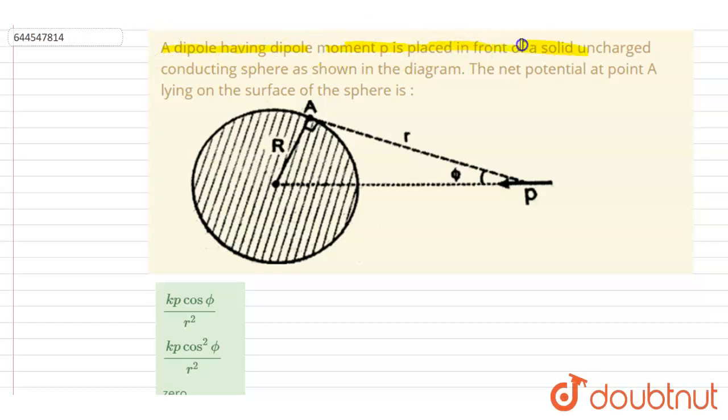As shown in the figure, the net potential at a point A on the surface of the sphere is...